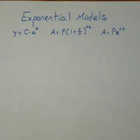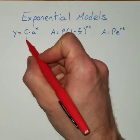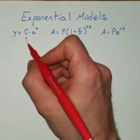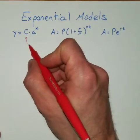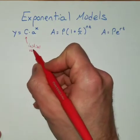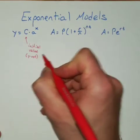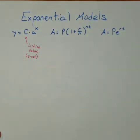The first one was the coefficient C. That is always going to be your initial value or y-intercept.